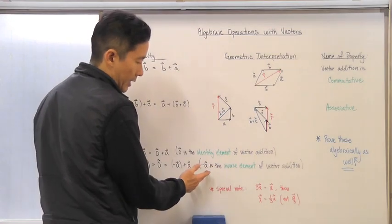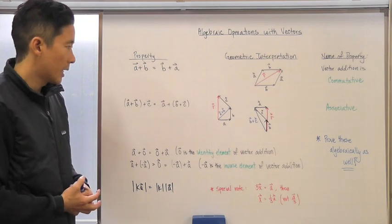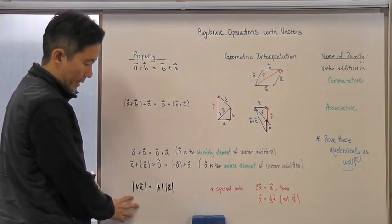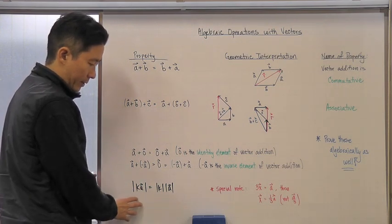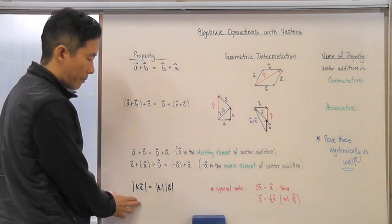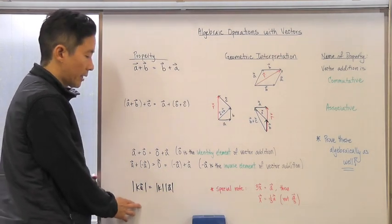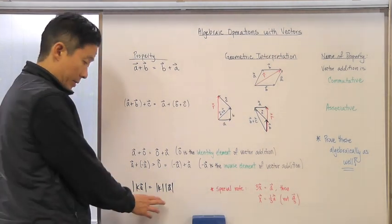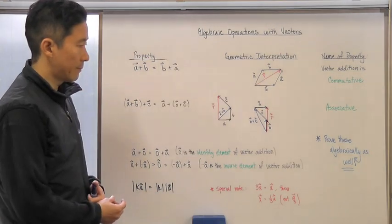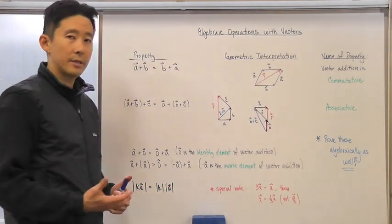The opposite of vector a added to vector a gives us the identity element, and commuting it also gives the identity element. Therefore, the opposite of vector a is called the inverse element for vector addition. This last property is a bit different — it looks at the magnitudes of vectors and whether the order of operations matters. We'll examine the geometric interpretation, and I invite you to think about how it works out and bring any questions to class.